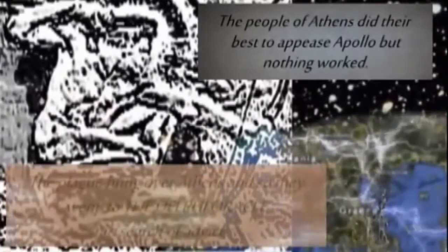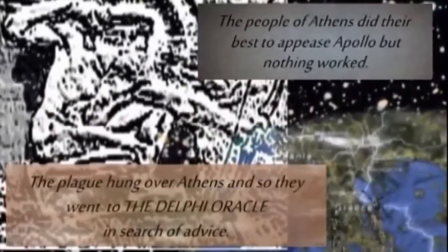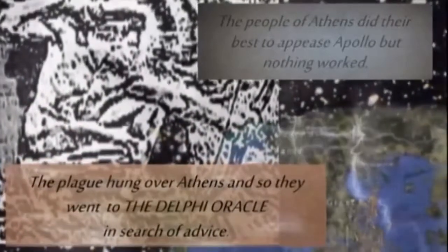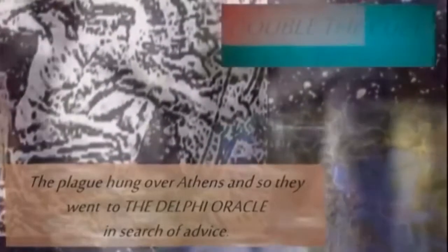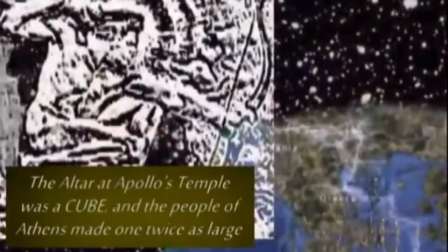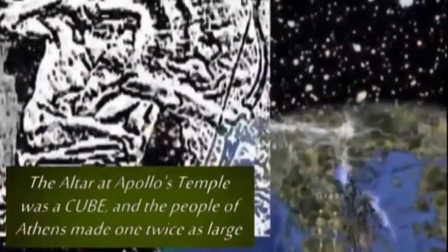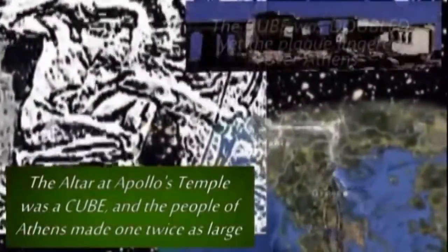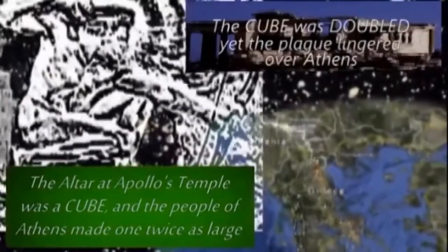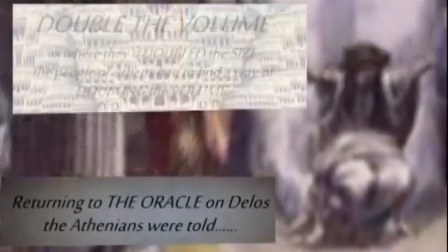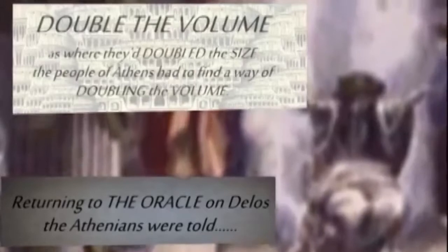The people of Athens did their best to appease Apollo, but nothing really worked, so they went to the Delphi Oracle in search of advice, and she told them to double the cube. The Temple of Apollo famously had a cube, and the people of Athens made it twice as large, thinking that this would get rid of the plague. However, this didn't quite work, and so they went back to the Oracle of Delphi, and they were told to double the volume of the cube.